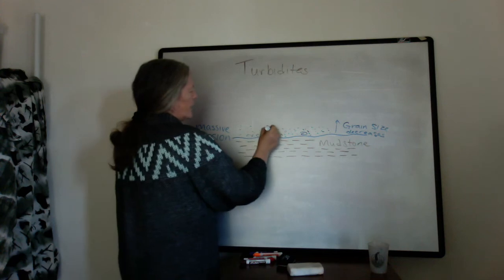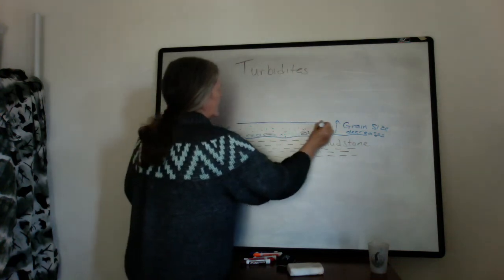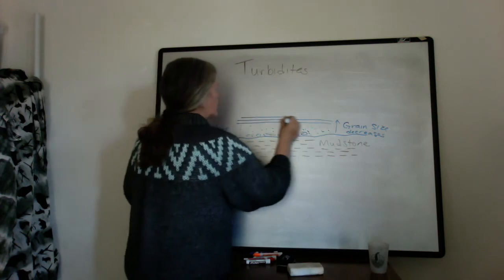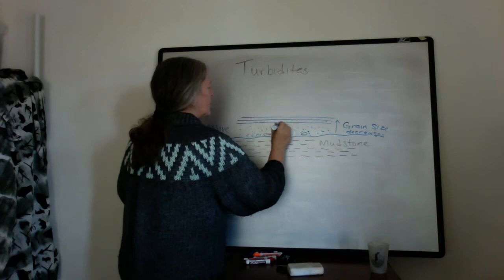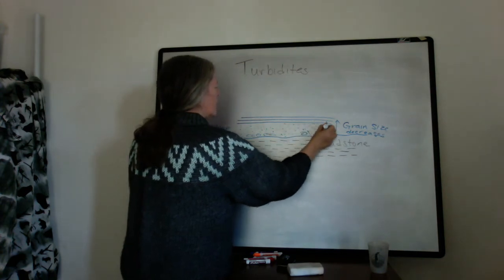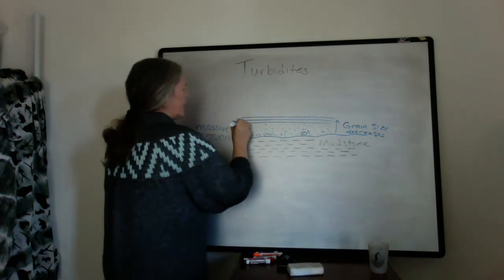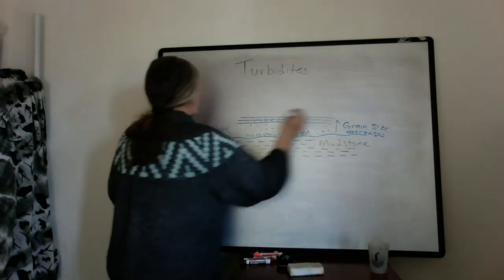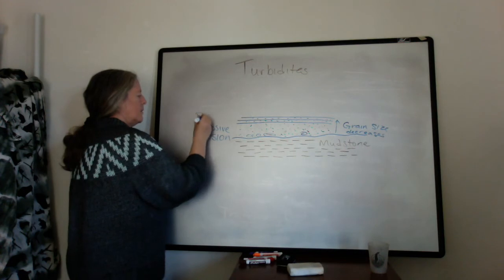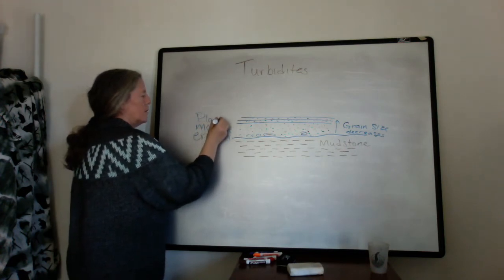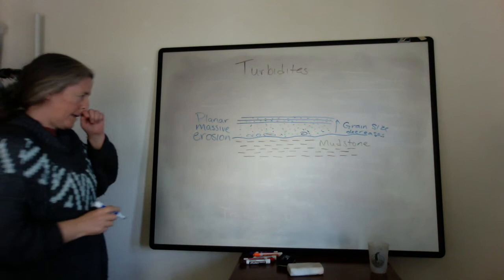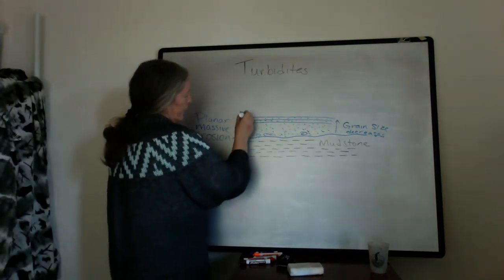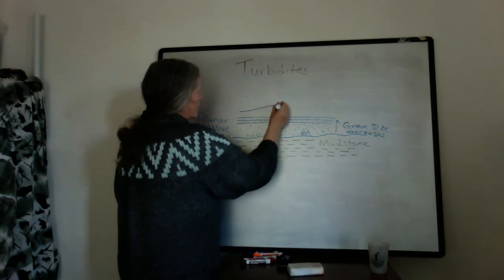It gets to a point where there's very strong planar lamination. It's still composed of sand — you usually lose the pebbles at the base as it grades upward. So you end up with a planar lamination, and then as you get further up, you start getting ripple cross-lamination.